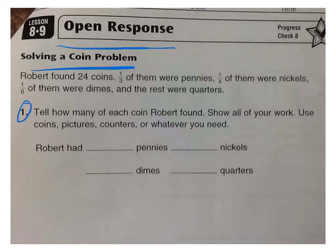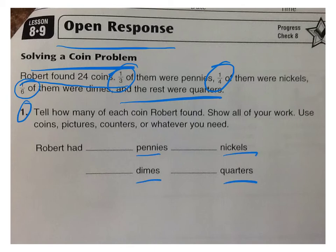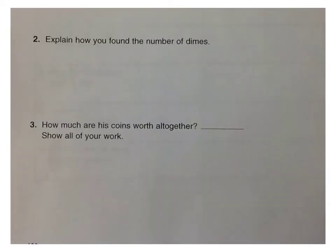Number 1. Tell how many of each coin Robert found. Show all of your work. Use coins, pictures, counters, or whatever you need. So again you can use coins or counters for this. Robert found 24 coins. One third are pennies, one fourth are nickels, one sixth are dimes, and the rest were quarters. So how many pennies, nickels, dimes, and quarters did he have? There's 24 coins.